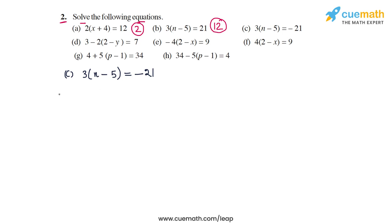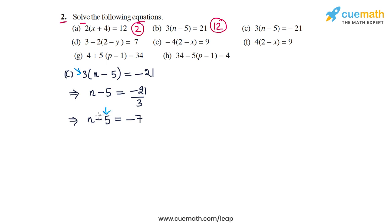In part c, the equation is 3 times (n minus 5) is equal to minus 21. First we divide both sides by 3, giving n minus 5 = minus 21 by 3, which is minus 7. We then add 5 to both sides, or transpose minus 5 to the right side to become plus 5, giving n = minus 7 plus 5, so n is equal to minus 2.